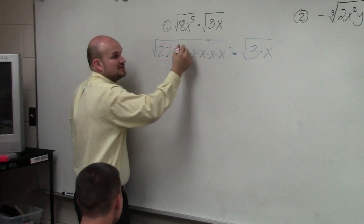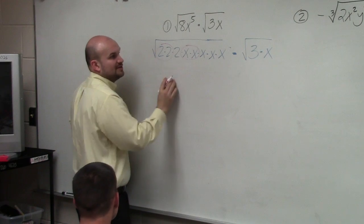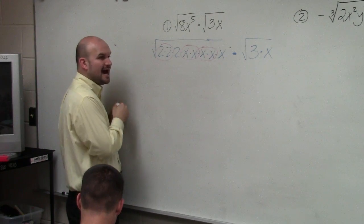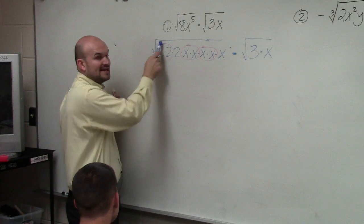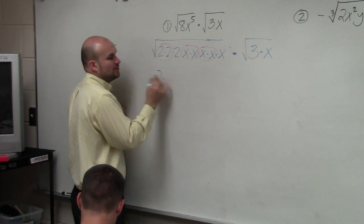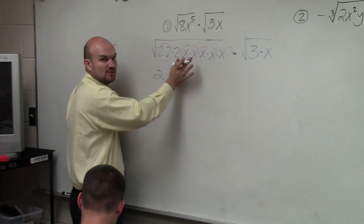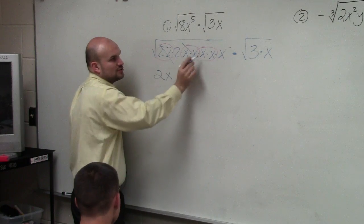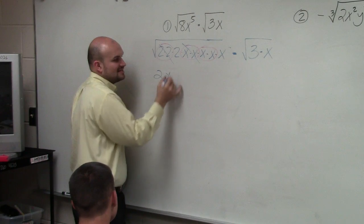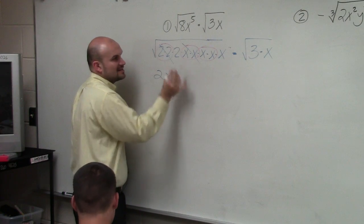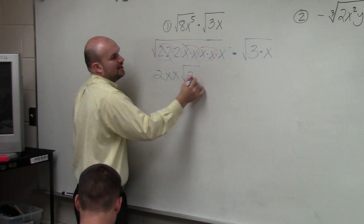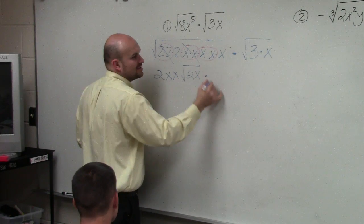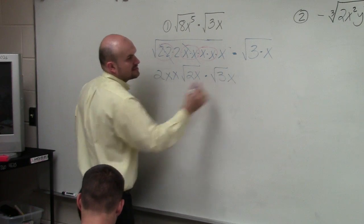I have a pair of two 2's, a pair of two x's, and another pair of two x's. Taking the square root of 2 times 2 gives 2. Taking the square root of x times x gives x. Taking the square root of x times x gives another x. I'm left with the square root of 2x times the square root of 3x.